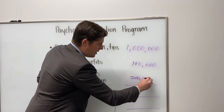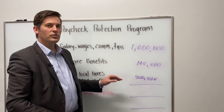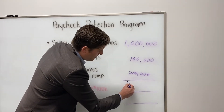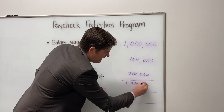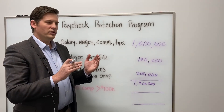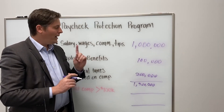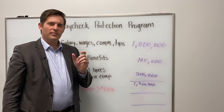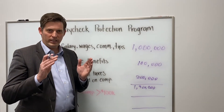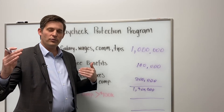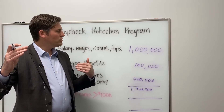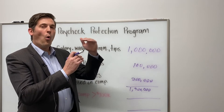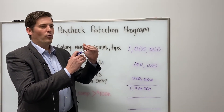You're going to have to prove the numbers you put in here — you're going to have to show your work. If you add all of these up, you get $1,300,000 in total eligible compensation for the year. However, it's capped at $100,000 per employee for salary, wages, commissions, and tips. So you find out the number of employees who are individually over $100,000 annually and subtract everything over that amount.